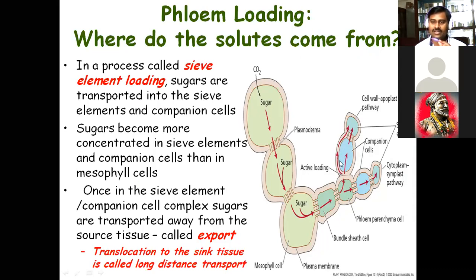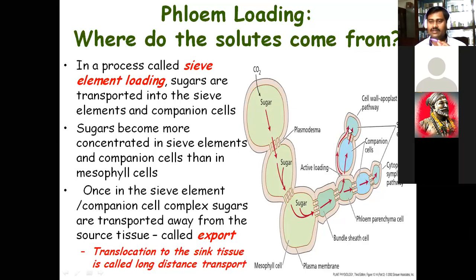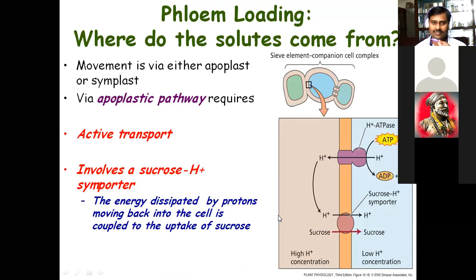Whatever water is maintained, it is by the apoplast way through the cell wall, and food is moving through the symplast way. Phloem plays an important role here. Food moves to bundle sheath cells, then to phloem parenchyma, then to companion cell, and then into the sieve elements. The sieve element and companion cell are the key phloem components involved.